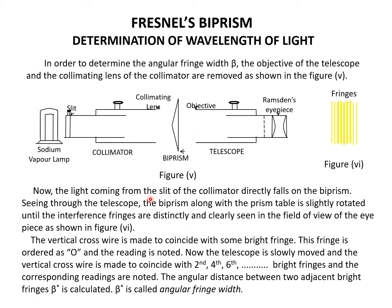The light from the slit of the collimator now falls directly on the biprism. Seeing through the telescope, the biprism along with the prism table is slightly rotated until the interference fringe patterns are clearly seen in the field of the eyepiece. The vertical cross wire is made to coincide with a bright fringe named 0 and the reading is noted. The telescope is slowly moved and the cross wire is made to coincide with the 2nd, 4th, 6th, etc., bright fringes, and the corresponding readings are noted. The angular fringe width between two adjacent bright fringes is calculated as beta.